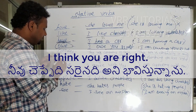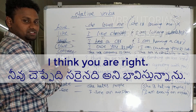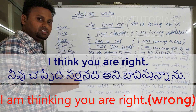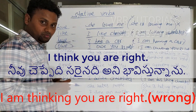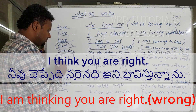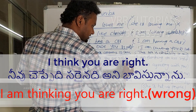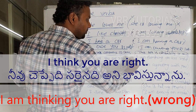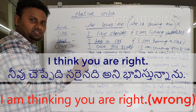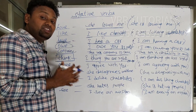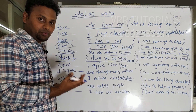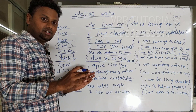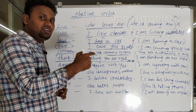Next: 'think.' Think can function as both a stative and a dynamic verb. As a stative verb — when expressing your opinion — say: I think you are right. We cannot say 'I am thinking you are right.' That is an incorrect sentence. When 'think' expresses opinion, it does not go with the continuous form.